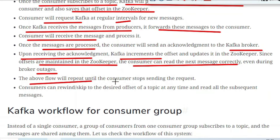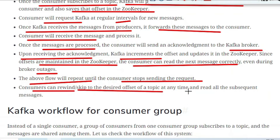The above flow will repeat until the consumer stops sending requests. In the last step, the consumer can rewind or skip to a desired offset of the topic at any time and read all subsequent messages. Since the offset details are present in ZooKeeper, the consumer already knows from which number to read messages from the Kafka broker. If it does not want to read some particular message or set of messages, it can easily skip them.